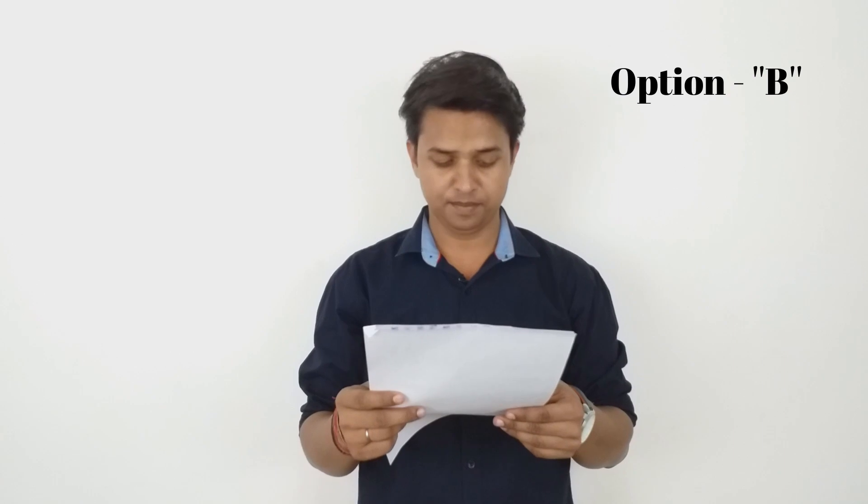Question 41: For which of the following values is 49n + 16n − a divisible by 64 for all n? The correct answer is option B, that is −1.